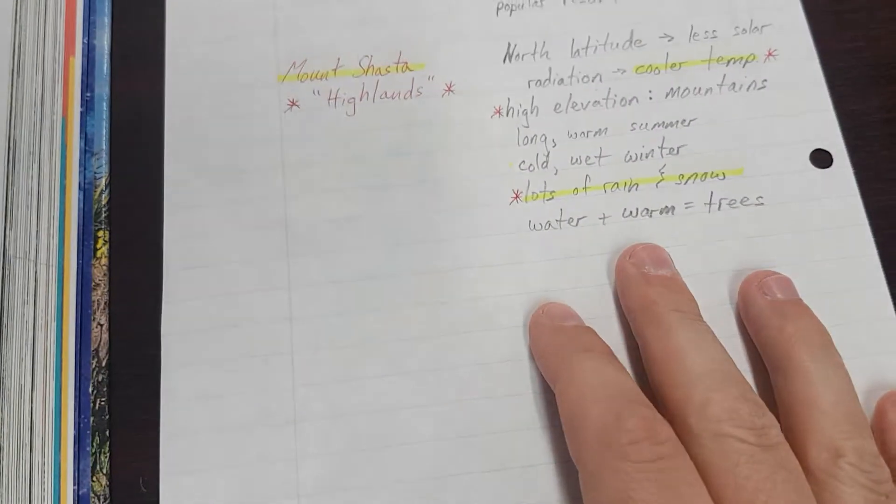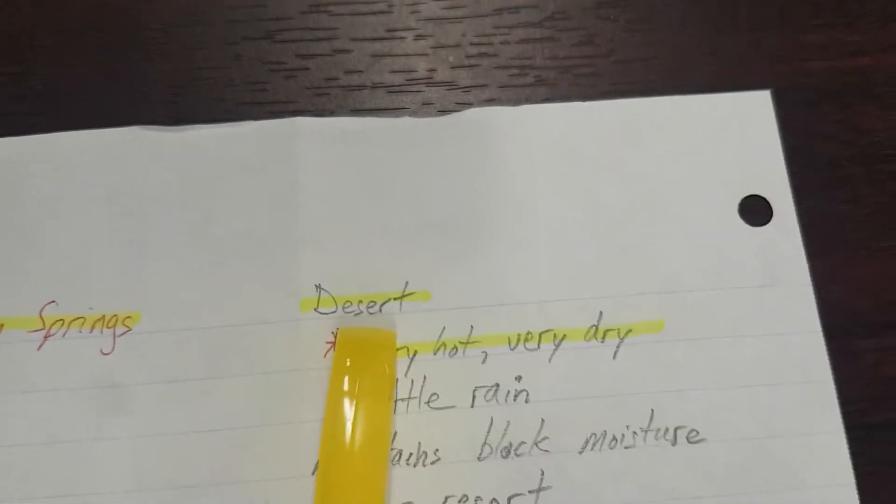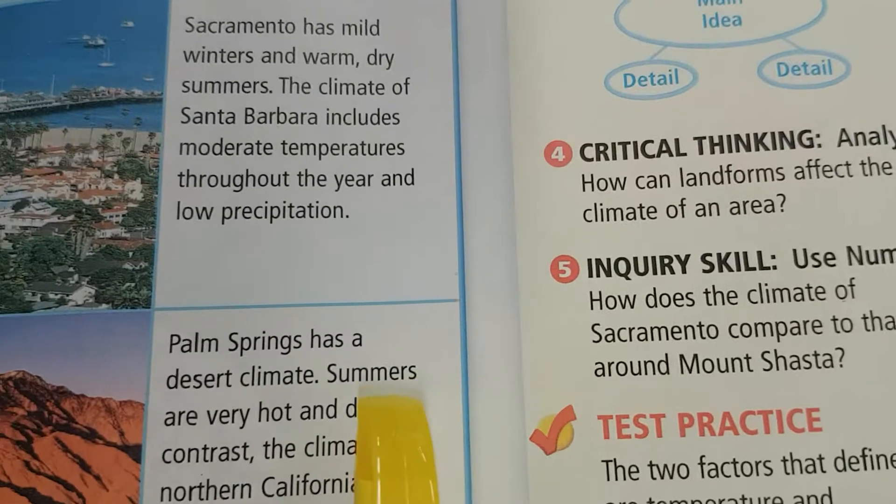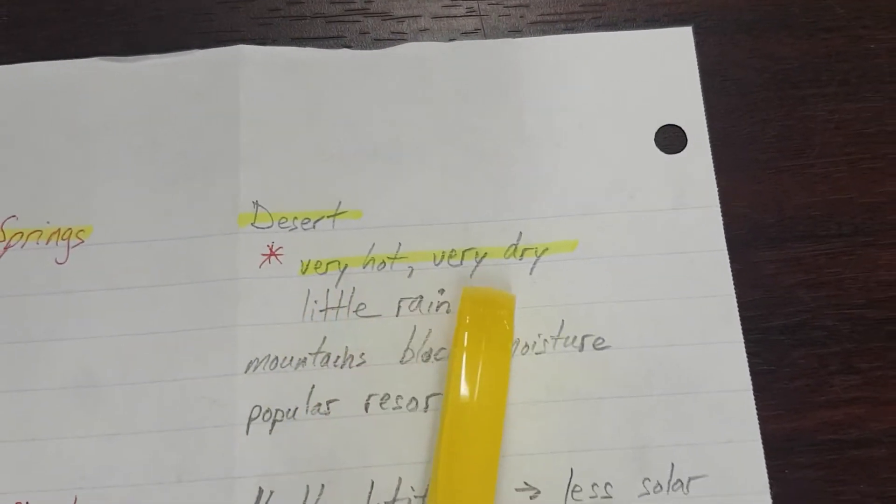Palm Springs. Flip your note page over. Palm Springs has a desert climate. Palm Springs, desert. Summers are very hot and dry. Very hot, very dry.